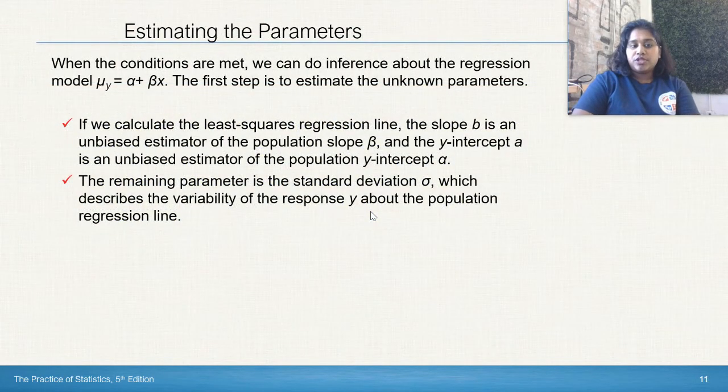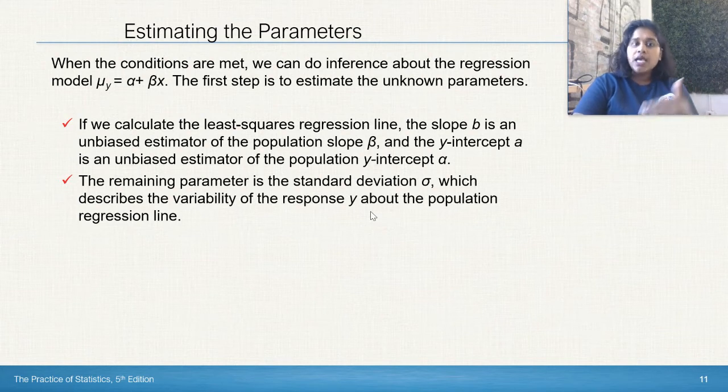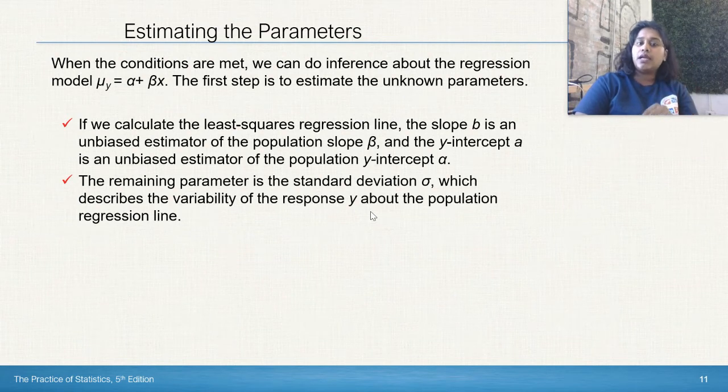Let's estimate some parameters, and I think we have an example to run through as well. When the conditions are met, we can do inference about the regression model, and here's that regression model. It models the y hat equals a plus bx, and the first step is to estimate the unknown parameters. If we calculate the LSRL, the slope of b is an unbiased estimator of the population slope b.